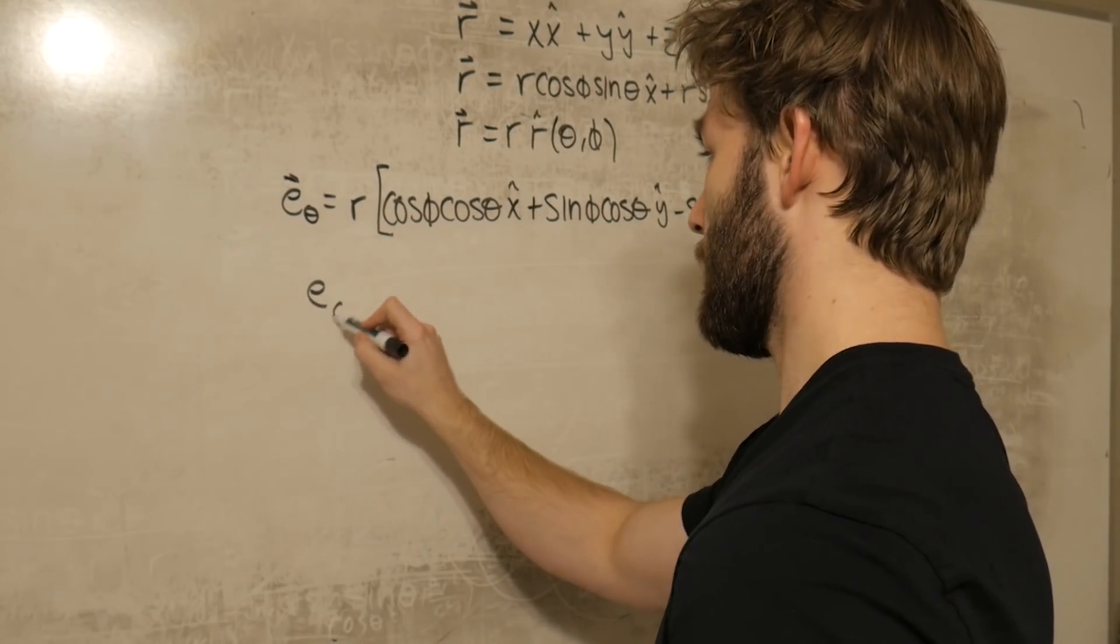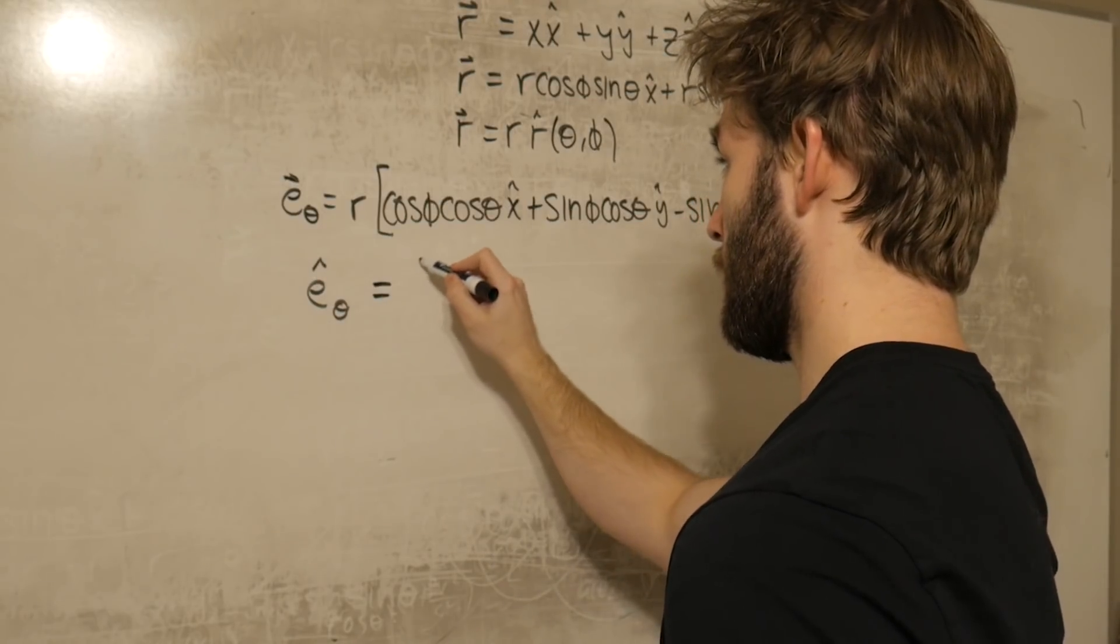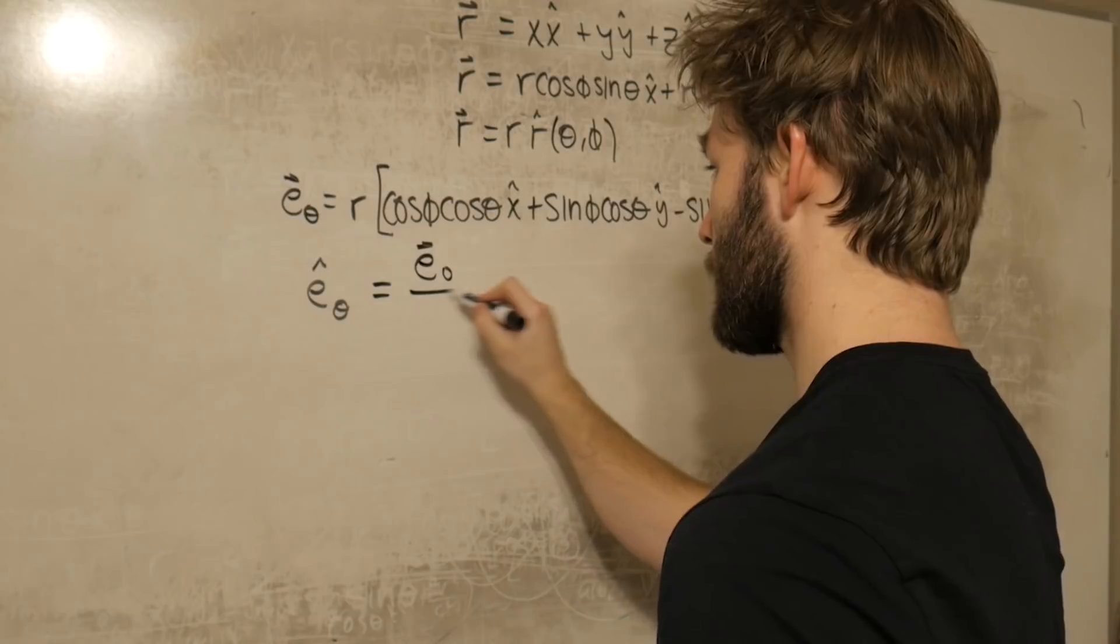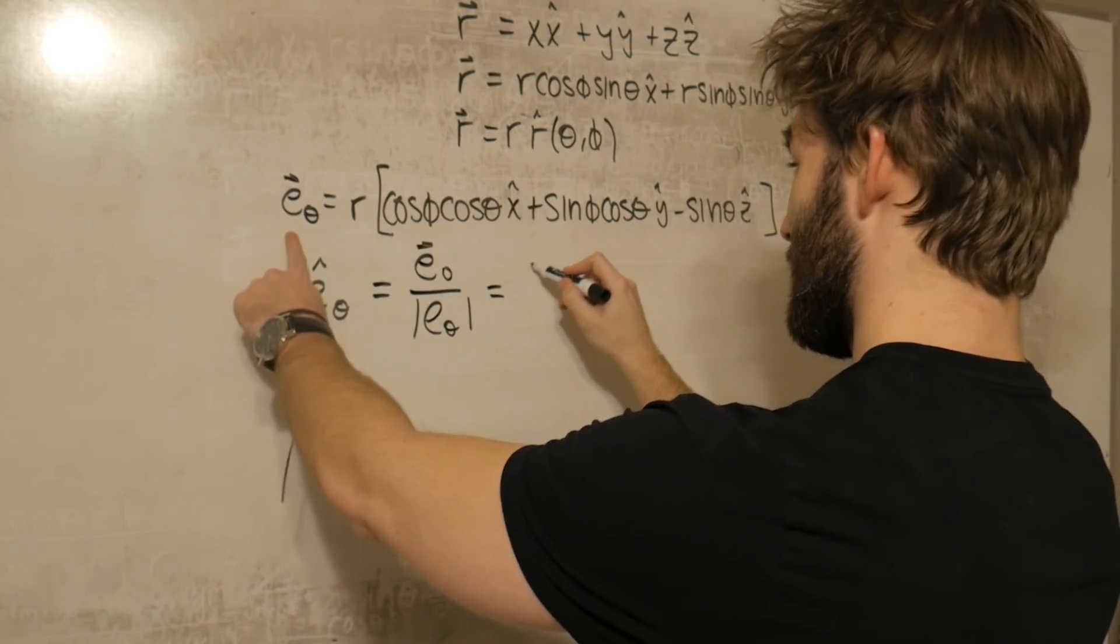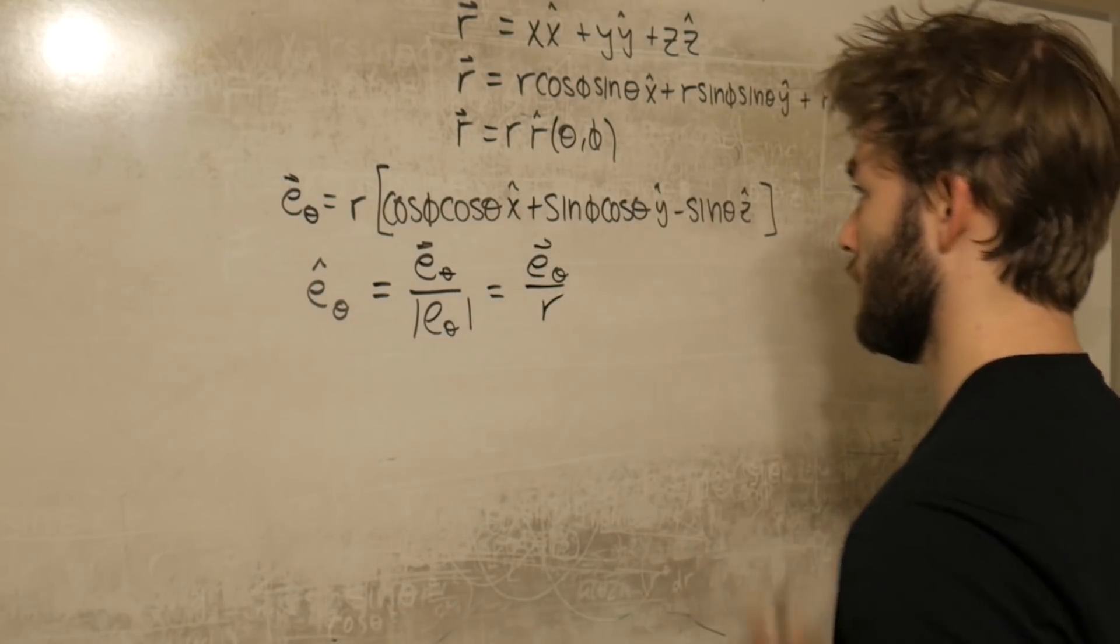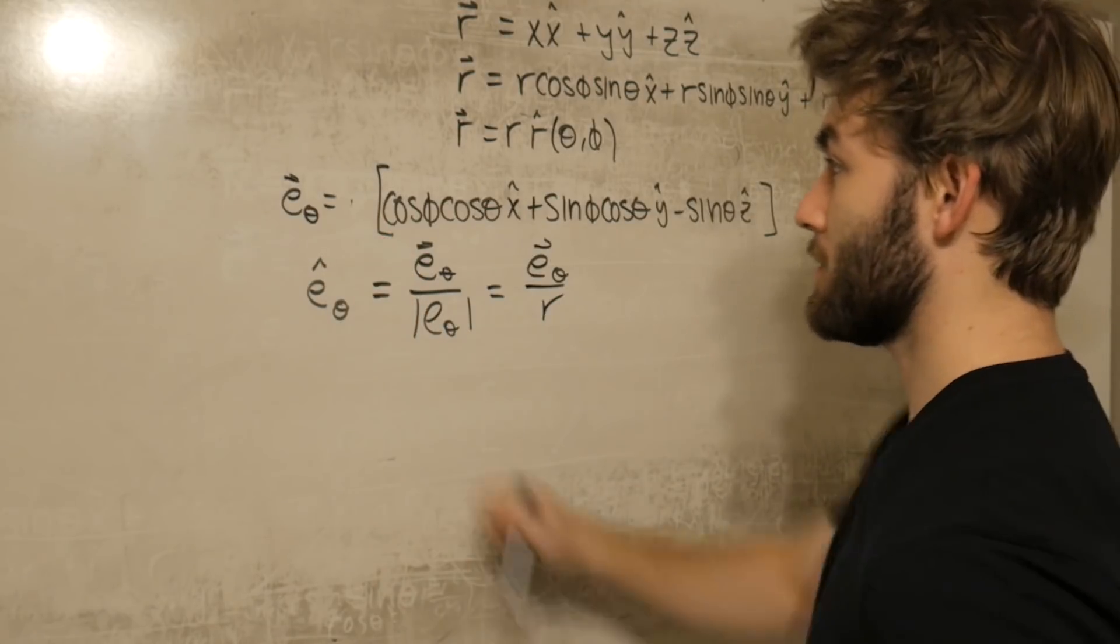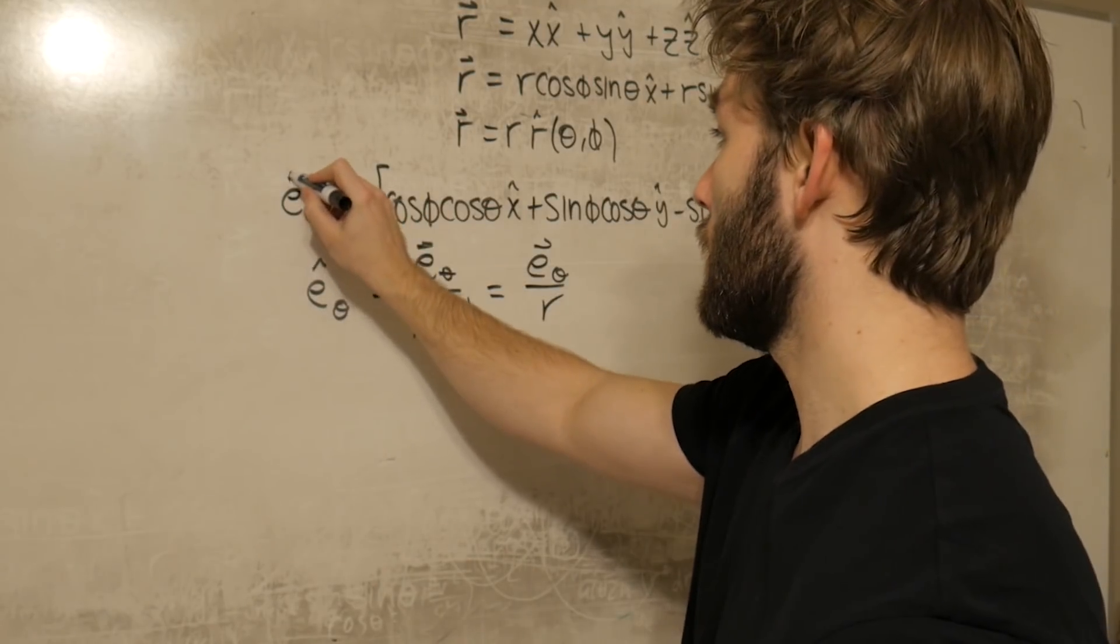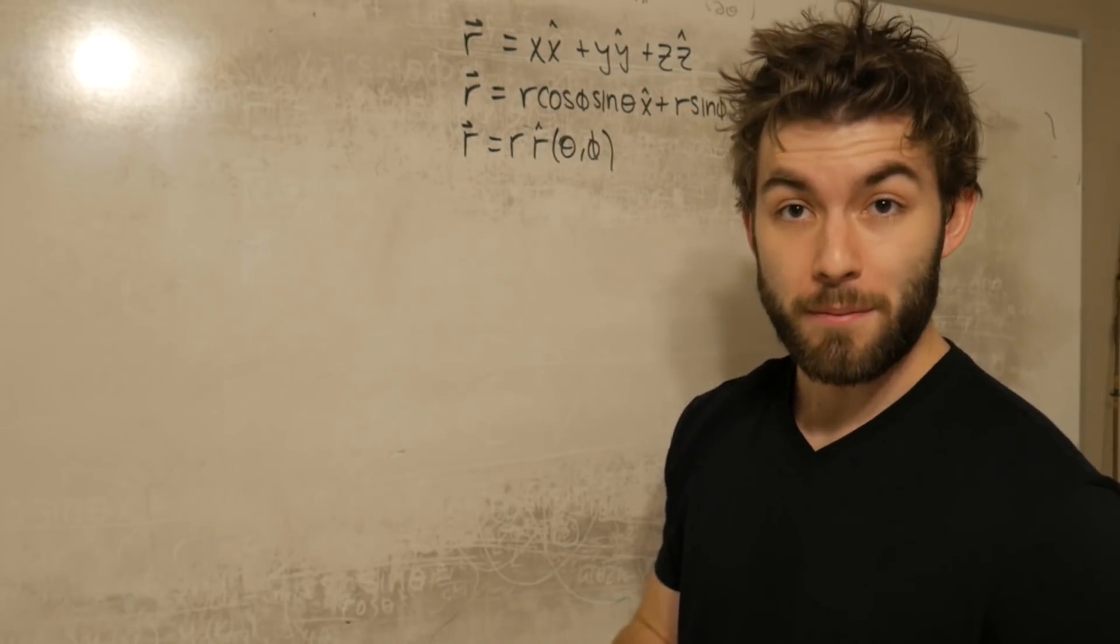So if we divide e theta, e sub theta, by the magnitude, because that's how we turn something into a unit vector, we get that it's just e theta over r. So this whole thing without the r becomes the unit vector in the theta direction.